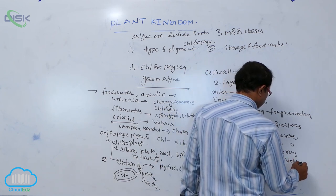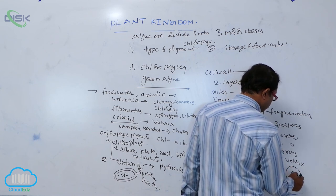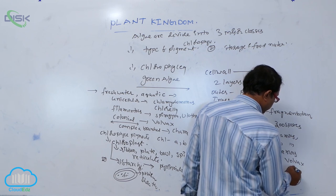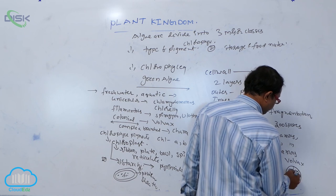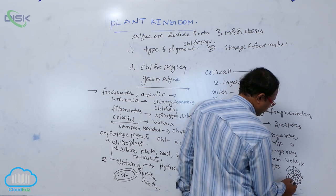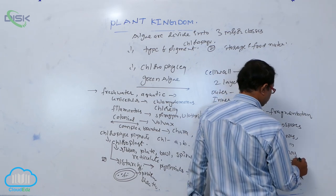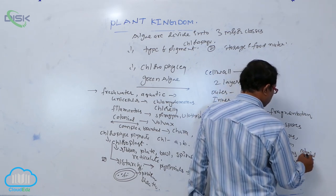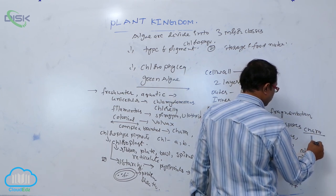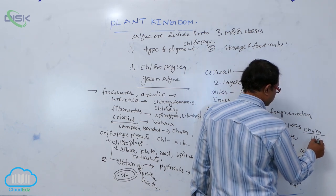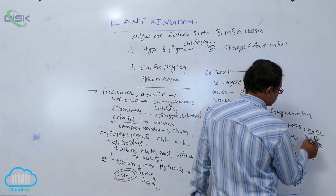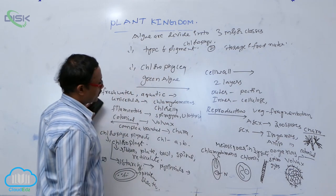Volvox is a colonial form in which daughter colonies are connected to each other. Chara shows a branched filamentous structure, just like a tree or leaf-like structure, with branches around a central axis. These are all examples of Chlorophyceae, the green algae.